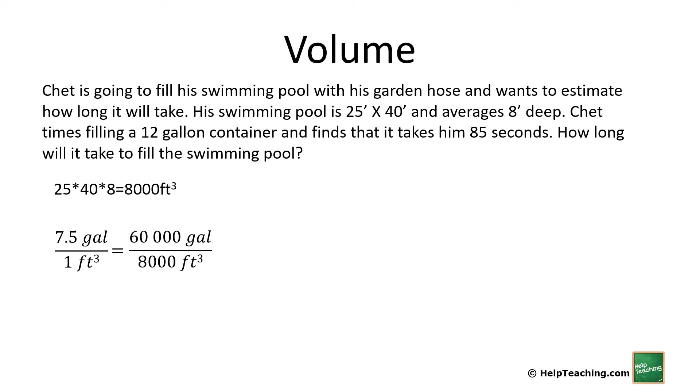Now let's look at the rate of gallons per second. We know he can fill 12 gallons in 85 seconds. So how many seconds will it take to fill 60,000 gallons? We cross multiply and divide again. 60,000 times 85 divided by 12 will give us 425,000 seconds. Now if you're anything like me, that doesn't really mean a whole lot. I have a hard time conceptualizing about half a million seconds. So let's break this down into units we can understand more easily. We know one minute is the same as 60 seconds, so I can set up a proportional relationship. 425,000 seconds times 1 minute divided by 60 seconds gives 7,083.3 minutes.